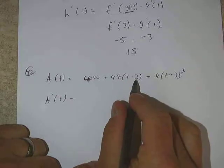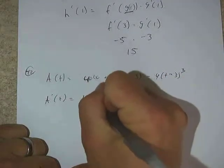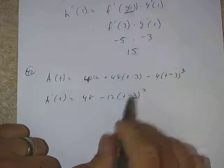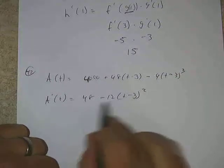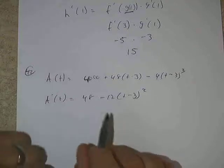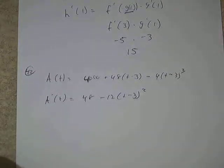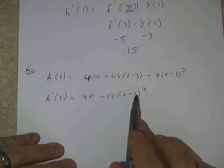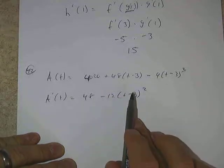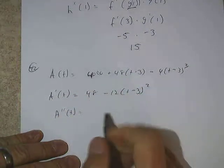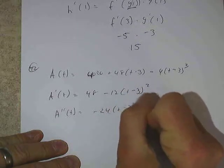A prime would be: the derivative of 4000 is 0, the derivative of 48t is 48, and the derivative of −4(t−3)³ is −12(t−3)² times 1. So A prime = 48 − 12(t−3)² is our rate function. Now to maximize this function, we find its derivative and set it equal to zero — those are our candidates.